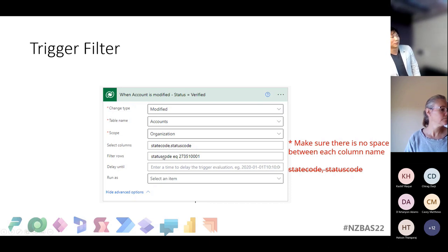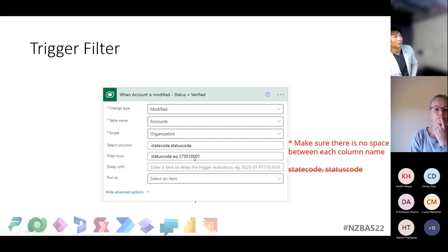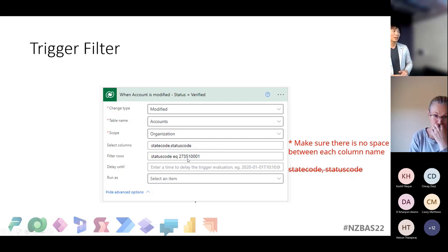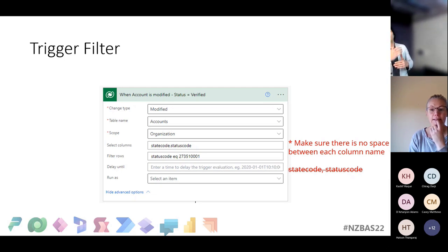If possible, filter further by adding filter rows — for example, trigger this account flow only when the status changes to 'verified' by setting the option set value. The only limitation is it can only filter based on values on the record itself — you cannot filter based on a related record or a parent account's specific values.